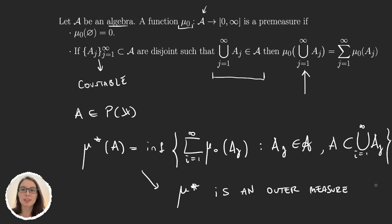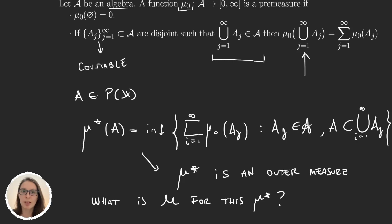The problem is still, what are the μ* measurable sets for the μ* outer measure defined this way? This is a very important question, because once we know which sets are the μ* measurable, then we know we can restrict this measure to this σ-algebra M and get a measure.